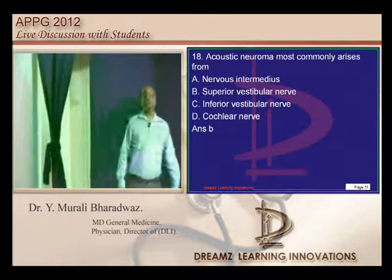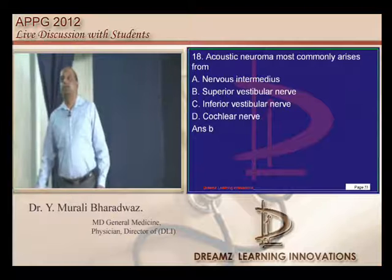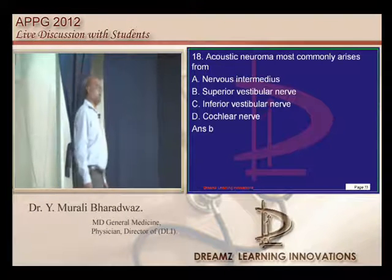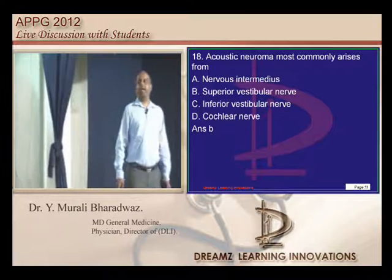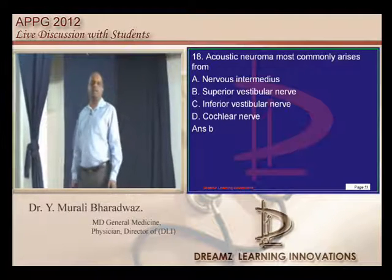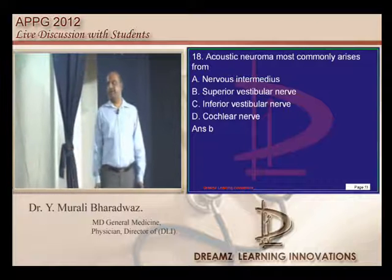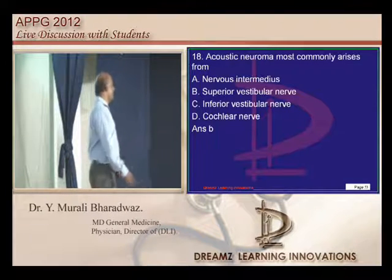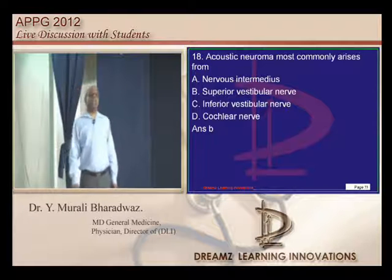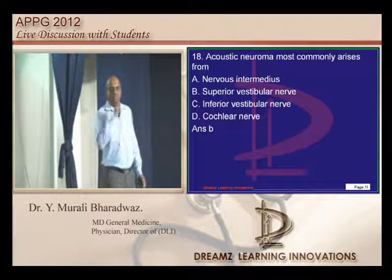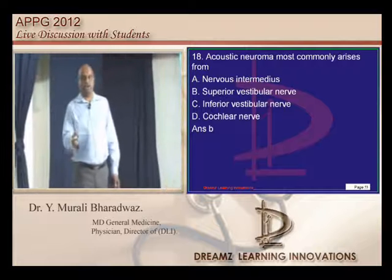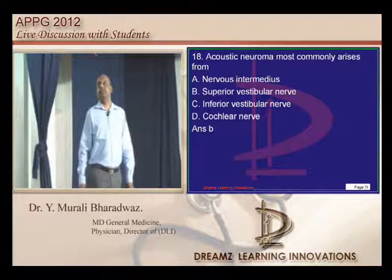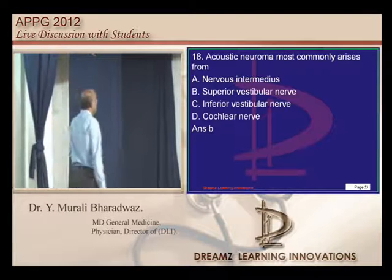From where does acoustic neuroma arise? Some answered inferior vestibular nerve. However, after speaking with otolaryngologists and a neurosurgeon, the consensus is that it arises from the superior vestibular nerve most commonly, though some newer references suggest the inferior vestibular nerve. The superior vestibular nerve origin is still the most widely accepted answer.